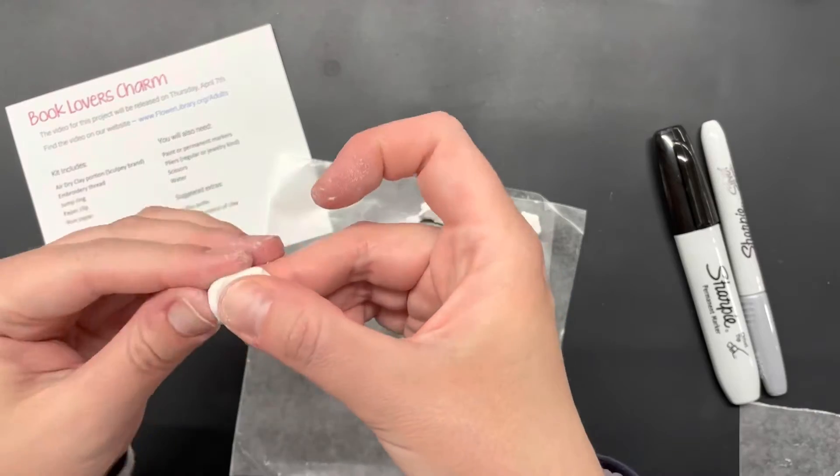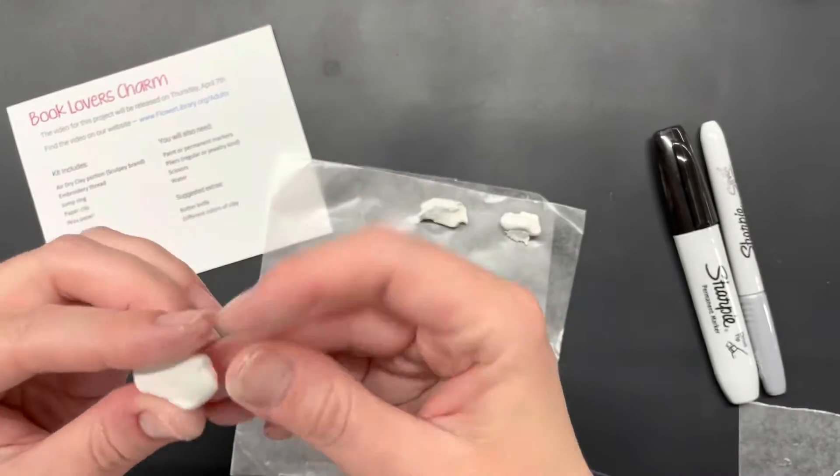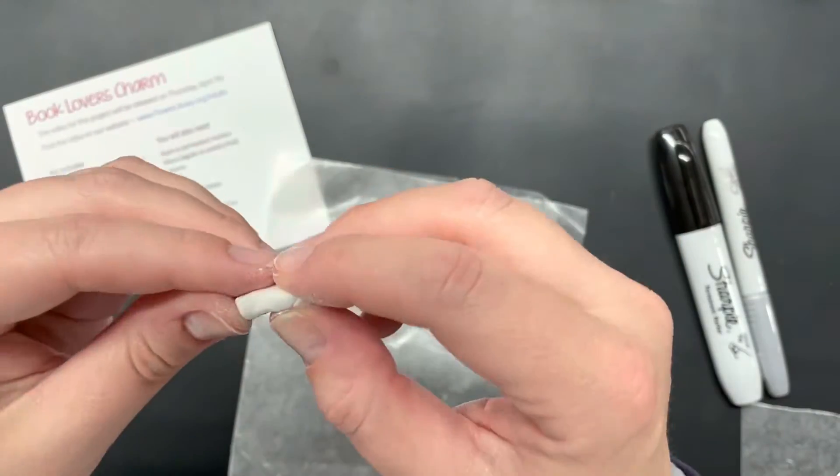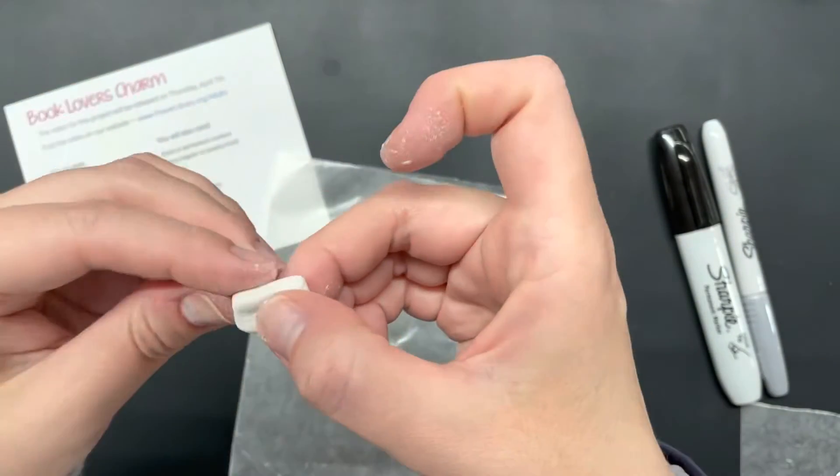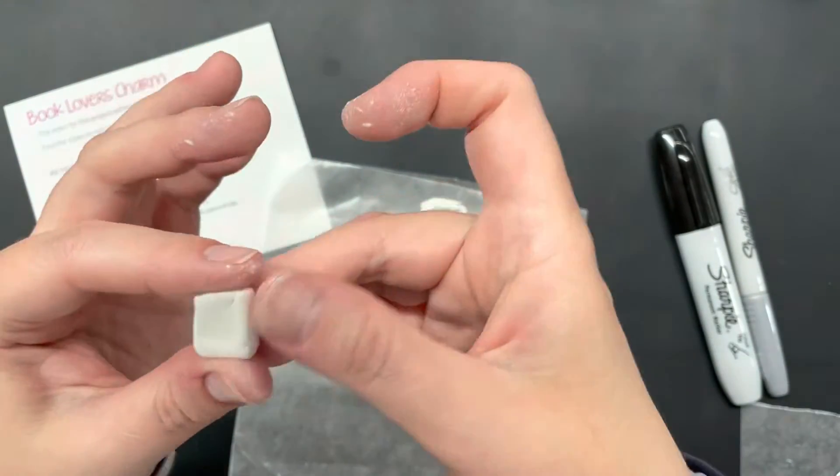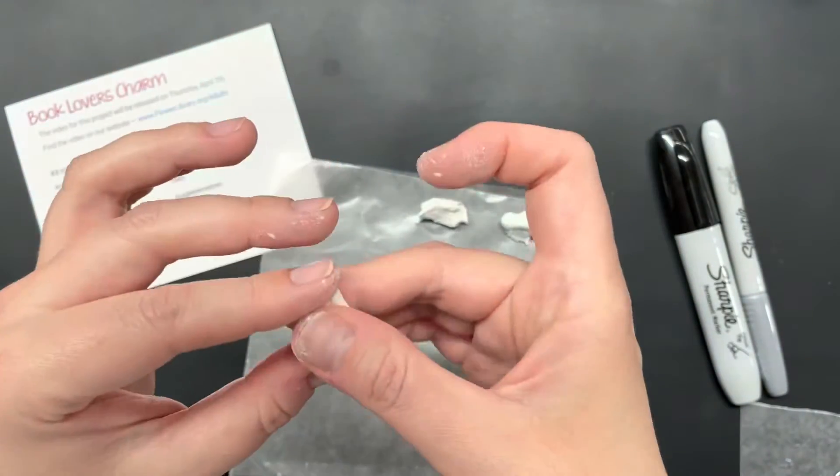Alright, so now all I'm going to do is just using my fingers I'm going to shape it into a rectangle, trying to keep it the same dimensions on all sides. They don't have to be perfect again, it's a little homemade item.